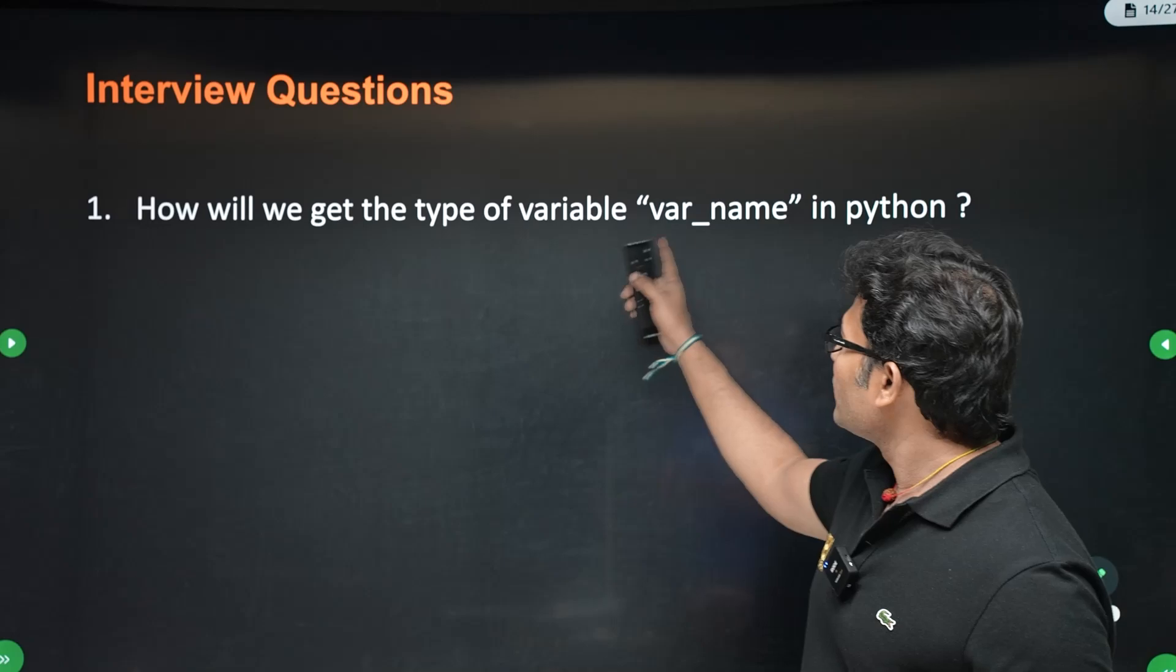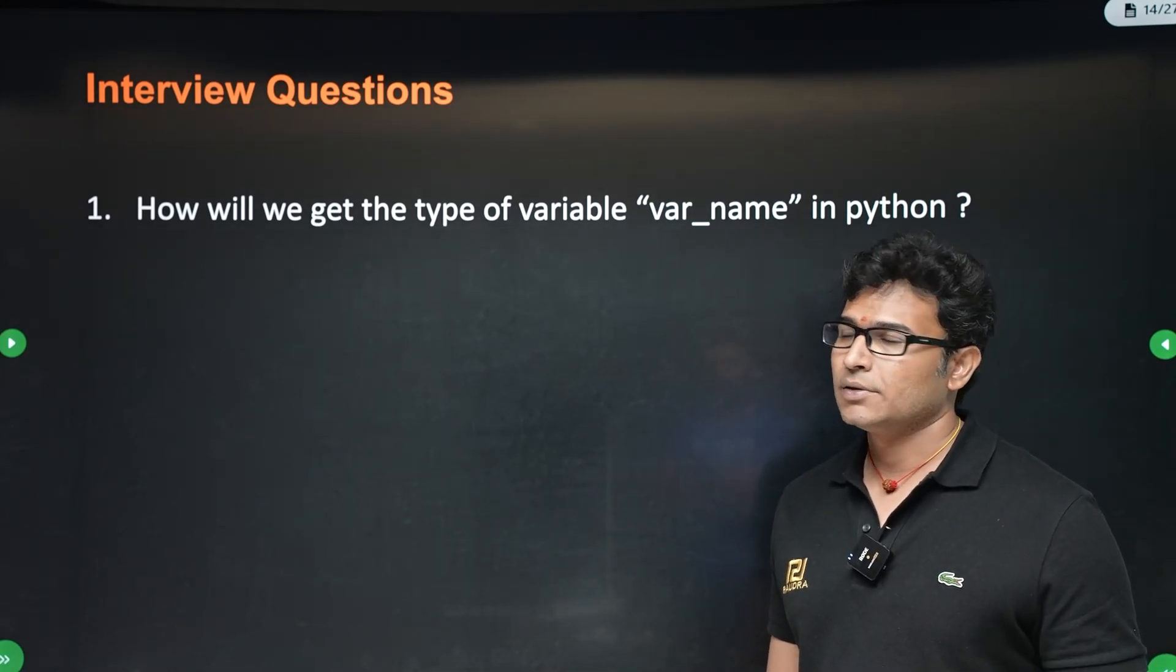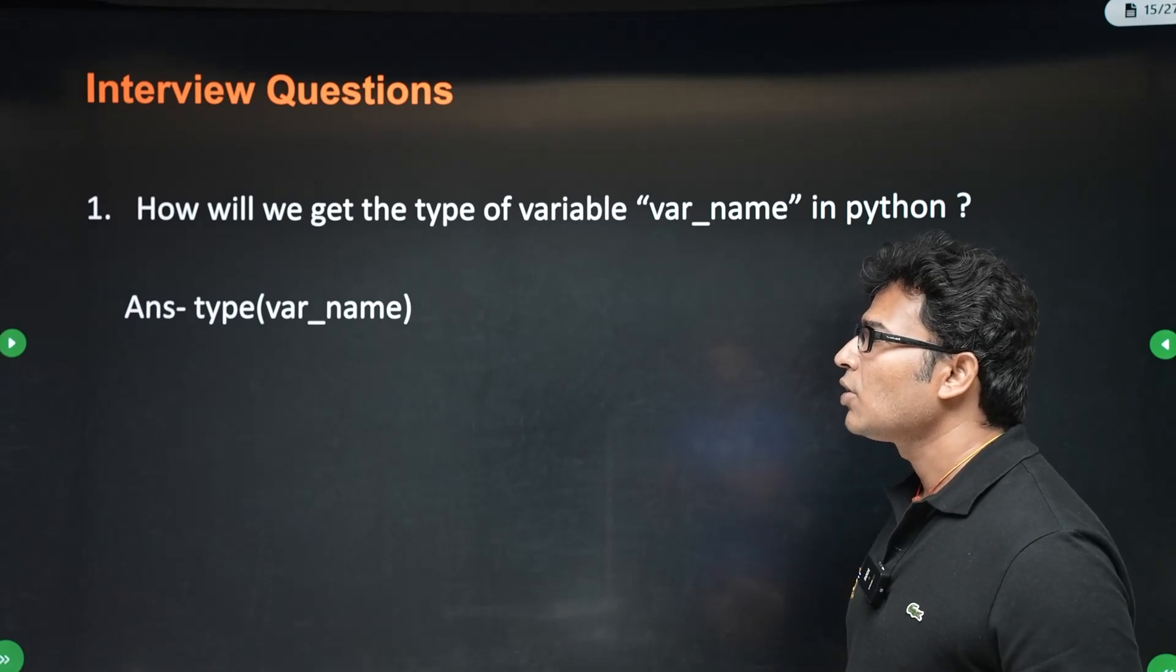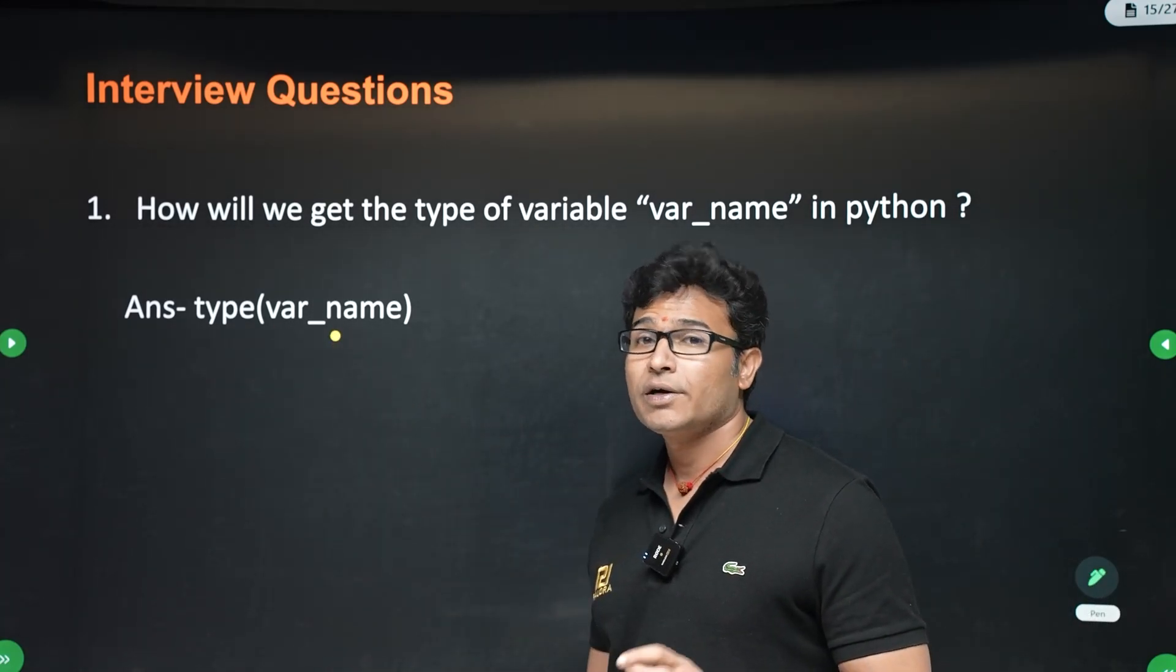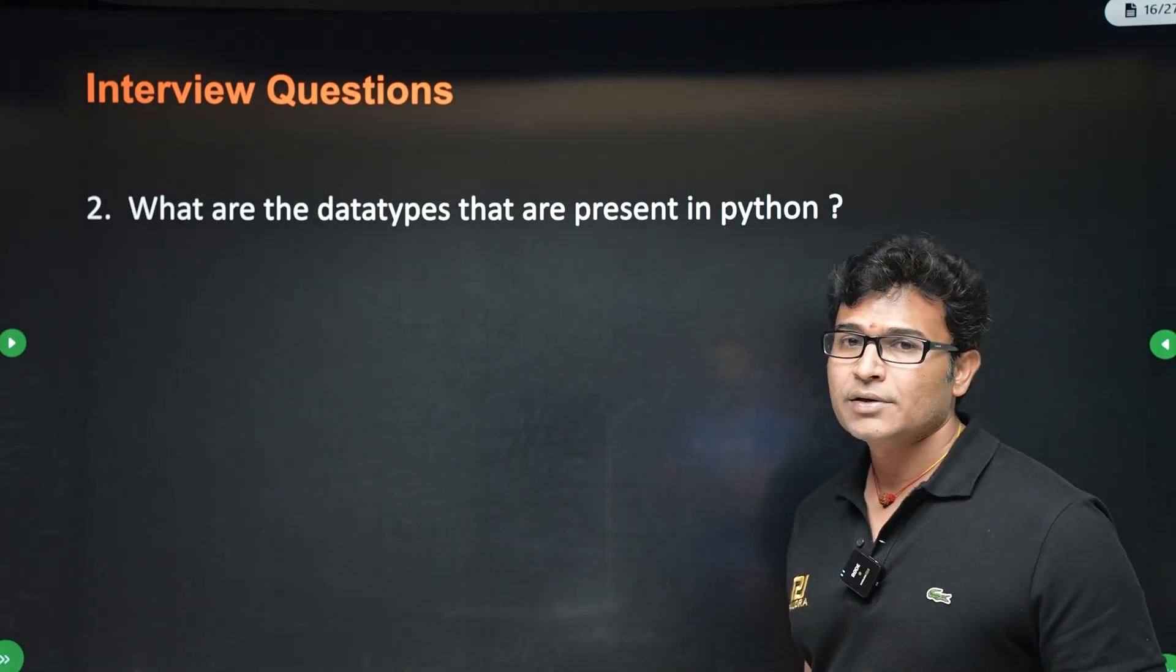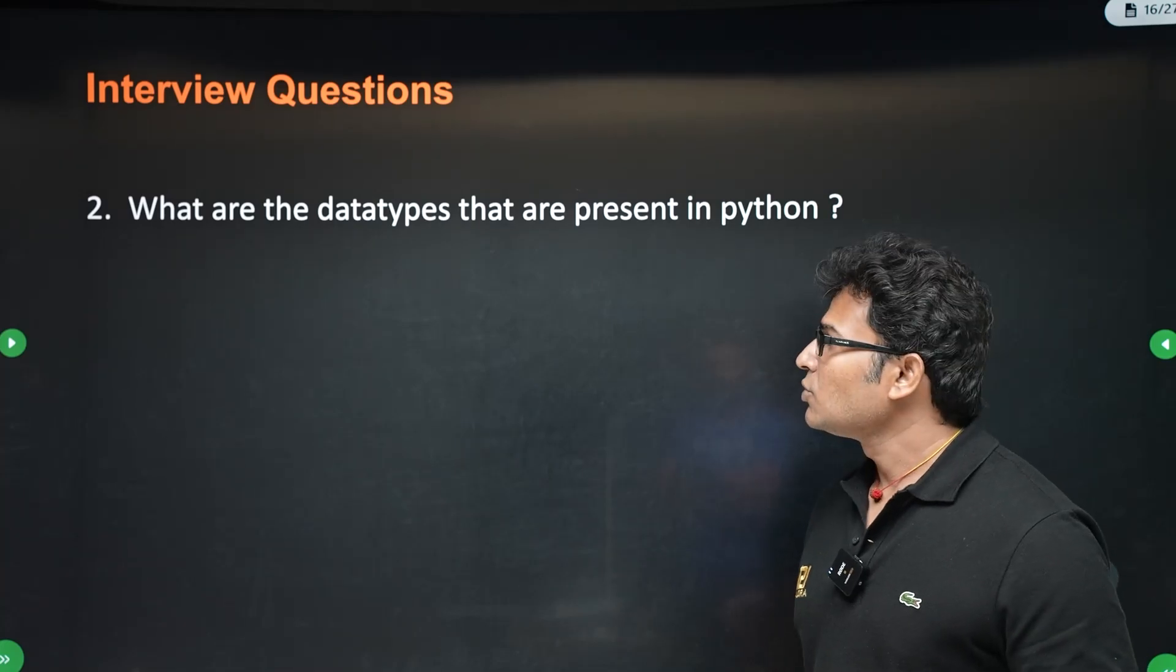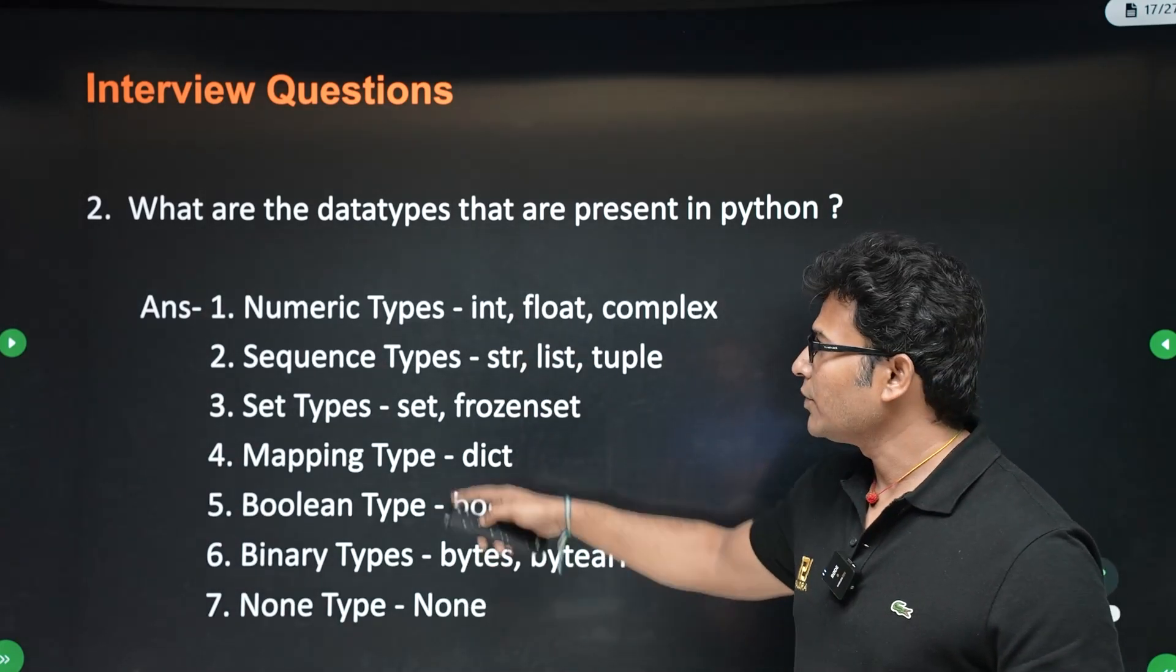So let's see some interview questions that are possible from this lecture. How to get the type of a variable? This is a popular interview question. How do you find out the type of a variable in Python? There is an inbuilt function called type. If you use the variable name, it will tell you what type of variable it is. And what are the various data types present in Python? This is an important question. So you have a lot of types. You can pause the video and go through all of them.